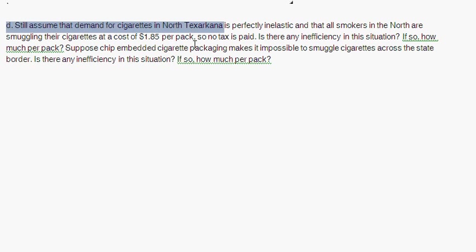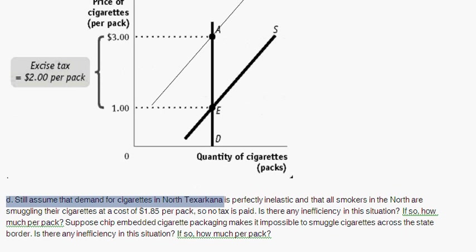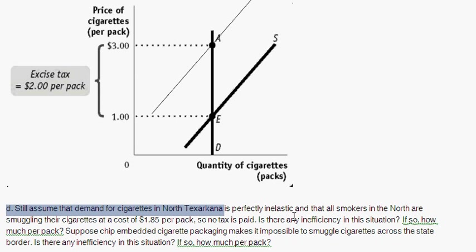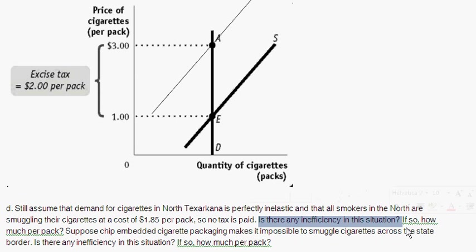The next question is Part D. Still assuming perfectly inelastic demand in North Texarkana, and that all smokers in the North are smuggling at a cost of $1.85 per pack: people in the North see the legal price of $3 and the smuggled price of $1 plus $1.85 equals $2.85, so they pay $2.85. No tax is paid because everyone is buying smuggled goods. Is there any inefficiency? Clearly yes — the inefficiency is the $1.85 per pack being spent to smuggle cigarettes from the South to the North.